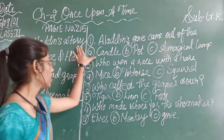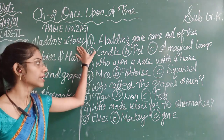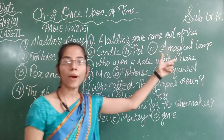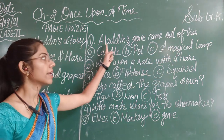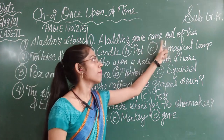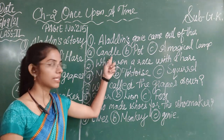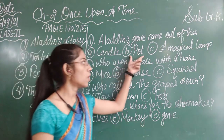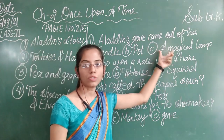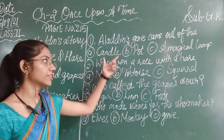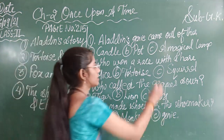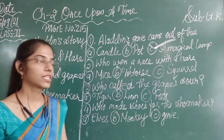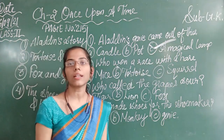This is all about the story of Aladdin. Now, related to this, the question is: 'Aladdin's genie came out of this.' Based on the story, we know that Aladdin's genie came out of a magical lamp. So the correct answer is option C — a magical lamp. You have to tick this answer.